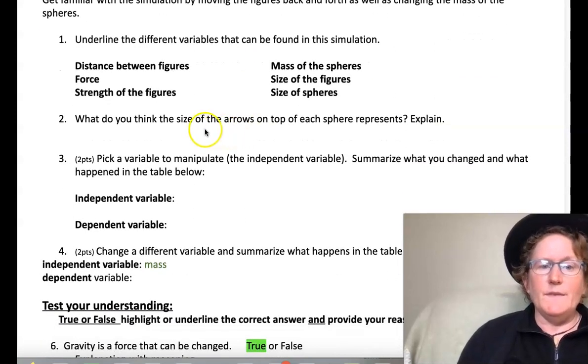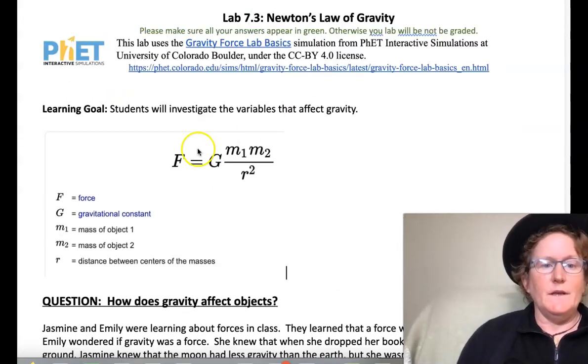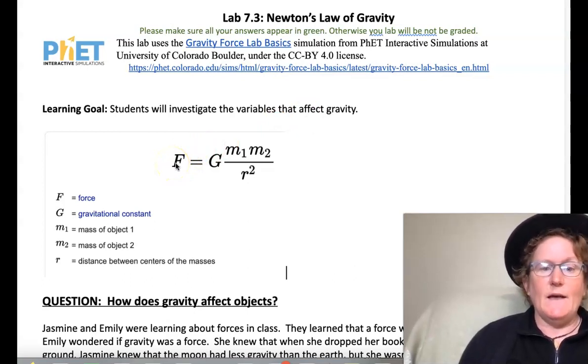Explain what you think the size of the arrows on top of each sphere represent. Remember, the universal law of gravity is the force. So this simulation is calculating, is doing this calculation for you. And that arrow on top is the force, the force of gravity.